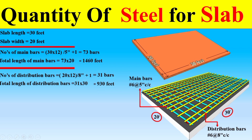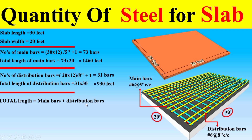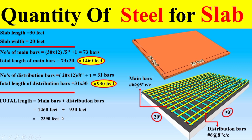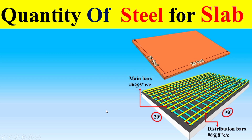Now dear students, to find the total quantity of steel, I will add the total length of the main bars and the total length of the distribution bars. The total length of the main bars is 1460 feet and the distribution bars is 930 feet. Adding both gives a total steel length of 2390 feet.